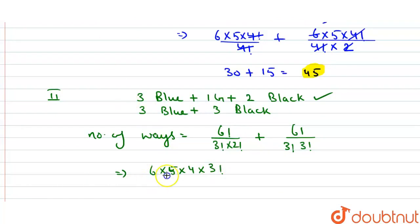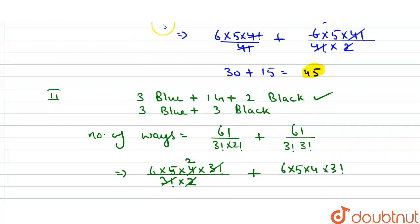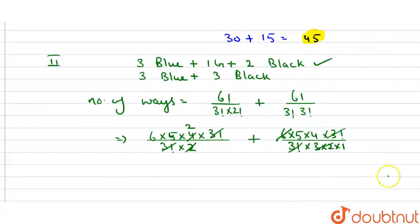2 factorial = 2, so 3 factorial × 2; 3 factorial cancels, 2 cancels 4 giving 2 times. For second case: 6 × 5 × 4 × 3 factorial divided by 3 factorial × 3 factorial. 3 factorial = 3 × 2 × 1 = 6; 3 factorial cancels, 6 cancels 6. So number of ways: 6 × 5 = 30, 30 × 2 = 60, plus 5 × 4 = 20 ways. Total from second case: 60 + 20 = 80.